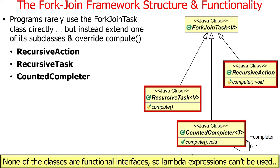One interesting quirk is that RecursiveAction, RecursiveTask, and CountedCompleter do not extend a common functional interface. As a result, you can't use lambda expressions to implement their compute methods, making code more verbose. The reason is historical — the Java ForkJoin pool was developed in Java 7 before lambdas existed, so functional interfaces weren't considered, and they haven't retrofitted everything yet.